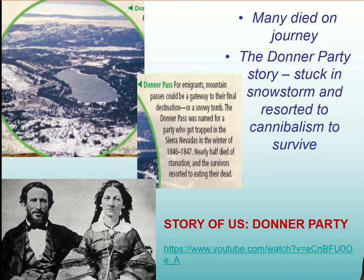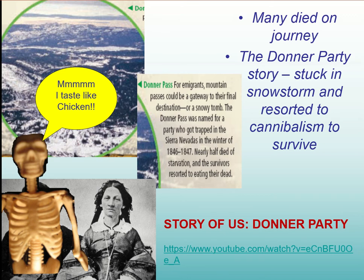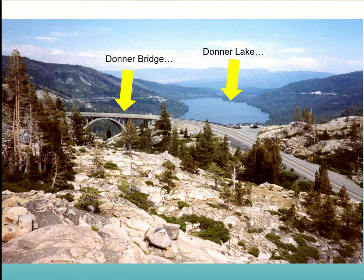There are some interesting stories that go along with the Oregon Trail, and one of them is the story of the Donner Party, who got stuck in a snowstorm — sixty-foot snow piles and everything like that. It was crazy. They were stuck for months and actually resorted to cannibalism to survive. Some crazy, creepy things — these two here are survivors. I'll put that video in the description down below. And here's just where that particular location is now: you have Donner Lake and Donner Bridge named after that particular event. And even with these stories, people still went out west.